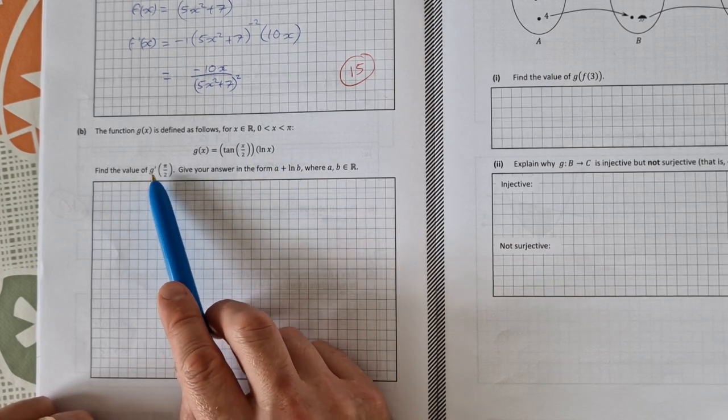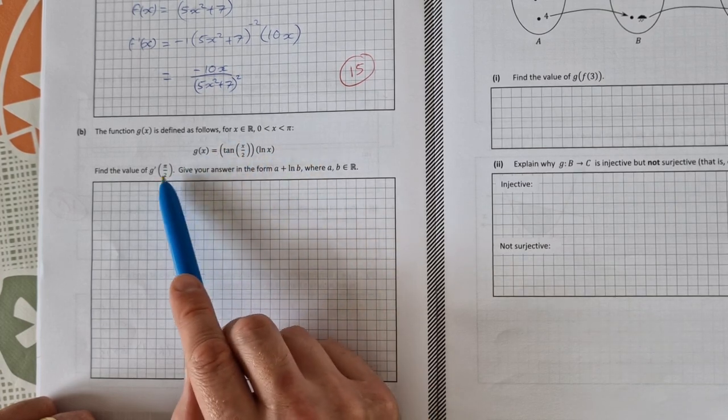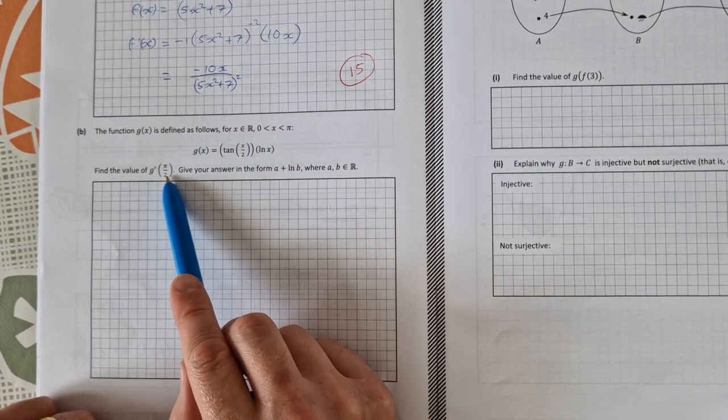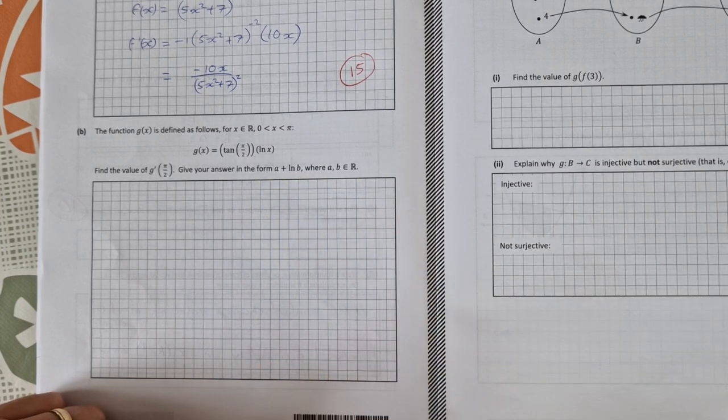Find the value of g prime of π over 2. So basically we need to differentiate it and then let x equal π over 2 and give our answer in the form of A plus natural log of b.